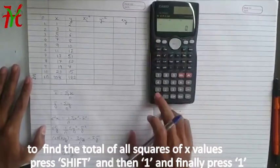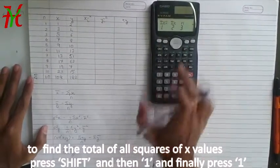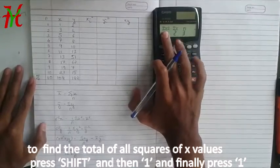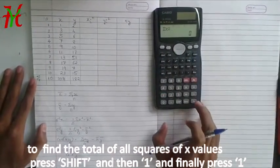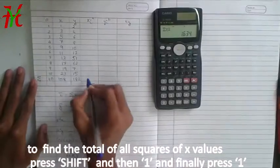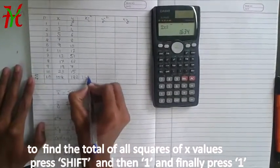Clear. Shift sum and then you can see summation symbol with X square written. If just press 1, summation X square equal to. Get the value at 1634.